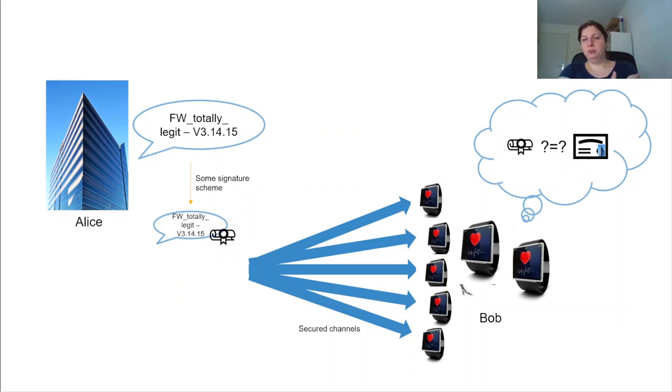they sign it with some signature scheme and send it over a secure channel. But now in this case, Bob is not one person, but actually many IoT devices.